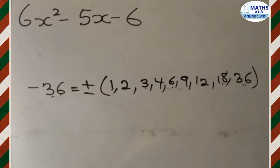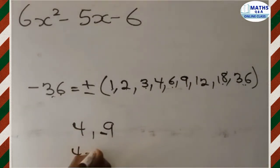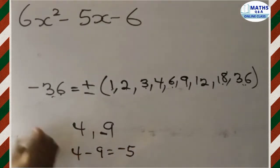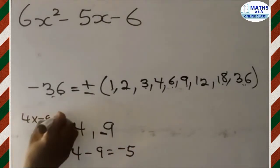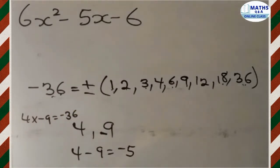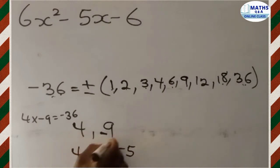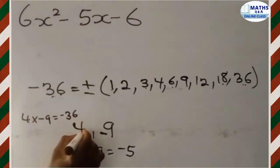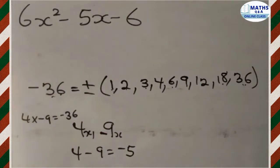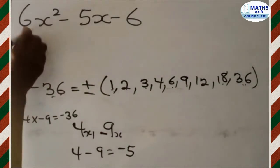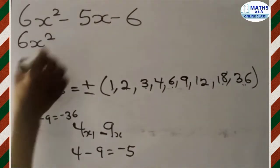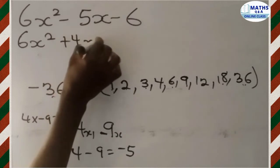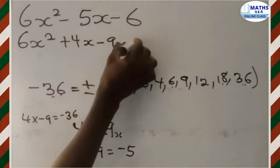Now, having seen the factors of negative 36, which of them can we add or subtract to get negative 5, which is the coefficient of x? The ones we need are 4 and 9. To get negative 5, we negate the bigger one: 4 minus 9 gives us negative 5, and 4 multiplied by negative 9 gives us negative 36. So the numbers we are going to use are 4 and negative 9, writing them in place of negative 5x. So our expression becomes 6x squared plus 4x minus 9x minus 6.